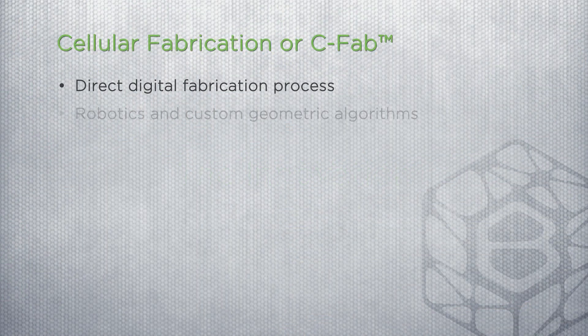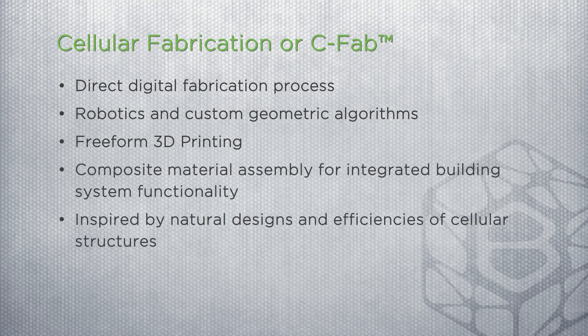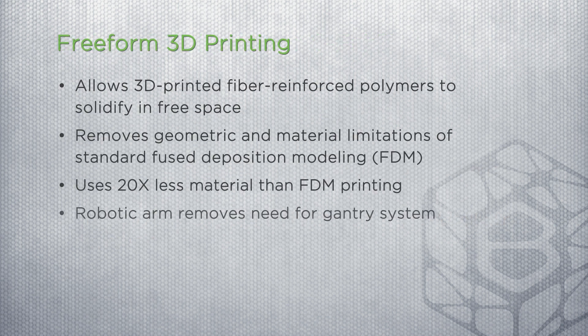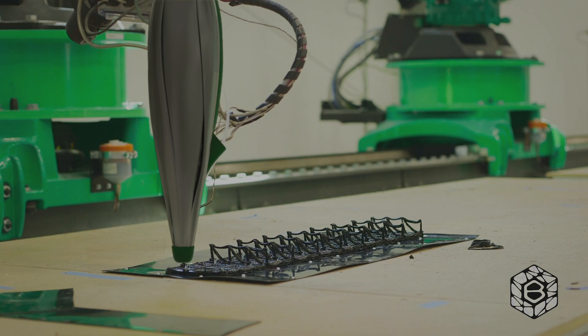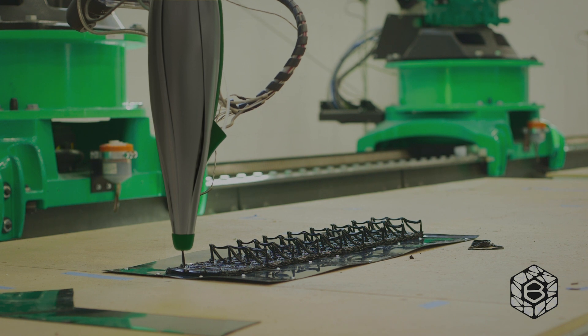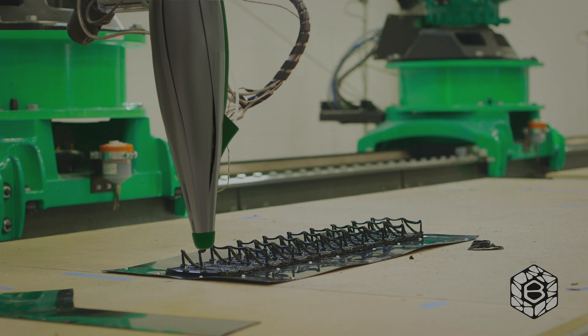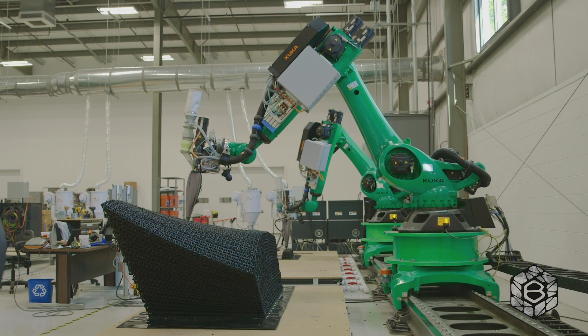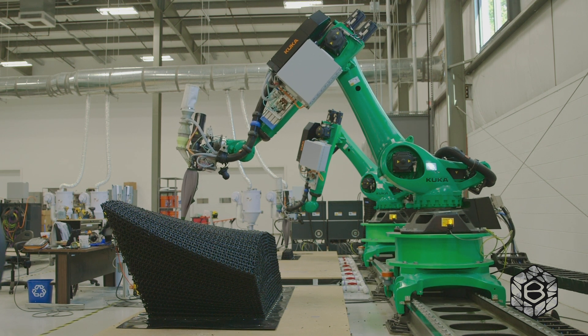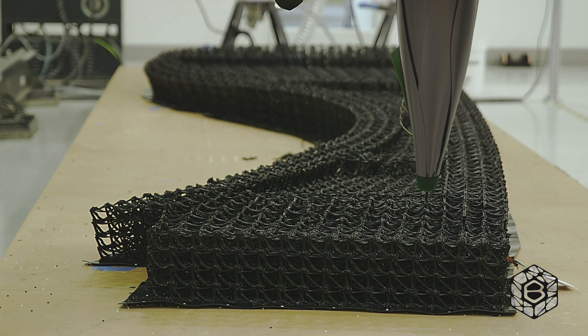Branch's fundamental innovation in the 3D printing space is a process called cellular fabrication, or CFAP, built upon a new capability called freeform 3D printing. Freeform 3D printing is fundamentally different than traditional layered deposition — we extrude fiber reinforced polymers that solidify in the air as they're extruded. That process allows us to print the same volumetric quantities as traditional large-scale 3D printers, but we use 20 times less material to accomplish that same volume.